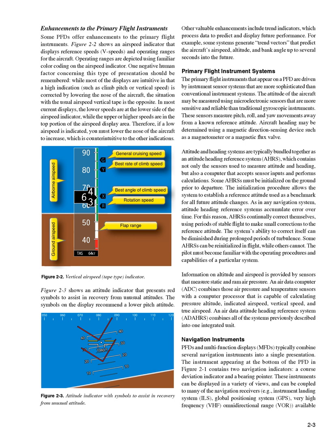One negative human factor concerning this type of presentation should be remembered. While most of the displays are intuitive in that a high indication, such as climb pitch or vertical speed, is corrected by lowering the nose of the aircraft, the situation with the usual airspeed vertical tape is the opposite. In most current displays, the lower speeds are at the lower side of the airspeed indicator, while the higher speeds are in the top portion of the airspeed display area. Therefore, if a low airspeed is indicated, you must lower the nose of the aircraft to increase speed, which is counterintuitive to the other indications.